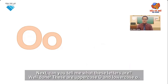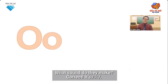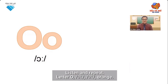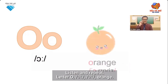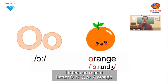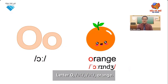Can you tell me what these letters are? Well done. These are uppercase O and lowercase O. What sound do they make? Correct. It's O. Listen and repeat. Letter O. O. Orange.